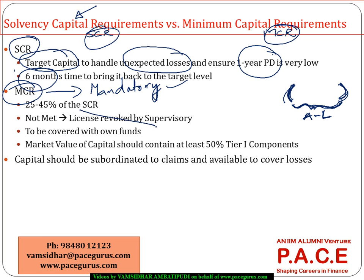If the insurance company does not have at least this much capital, its license itself can be revoked by the supervisory authority. Generally, what we see is the minimum capital requirement will be somewhere around 25 to 45 percent of the solvency capital requirement, and any violation of that requirement could result in revocation of the license. This has to be funded by own funds rather than loan or borrowed funds.